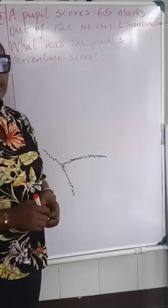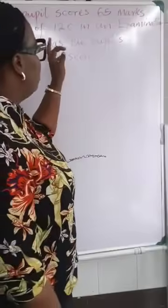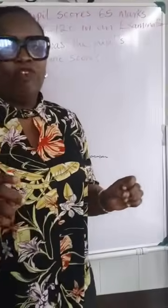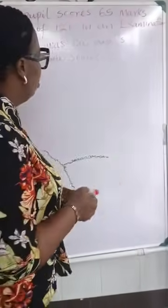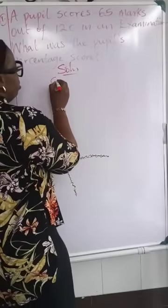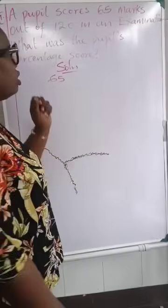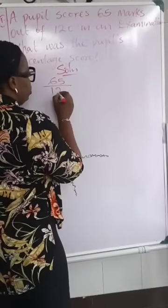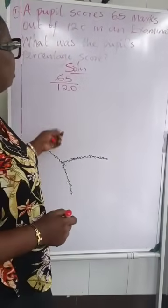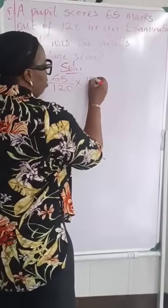What was the pupil's percentage score? What we are looking at is what that child actually had. The child, after taking an examination, had 65 out of the total marks for that particular exam — 120. We are going to make it a fraction. The total marks of the exam was 120 and the child got 65 out of that 120. Since it is a percentage question, we are going to multiply by 100.